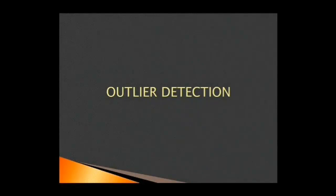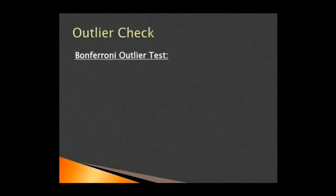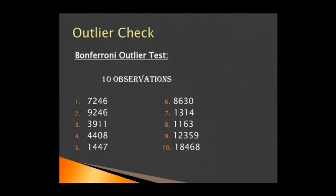Next, we carry out outlier detection using Bonferroni outlier test. On doing so, we find 10 outliers. So, on removing them from the dataset, our data reduces from 21,597 observations to 21,587 observations.